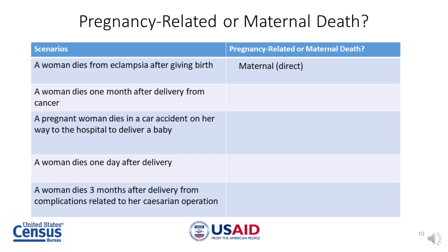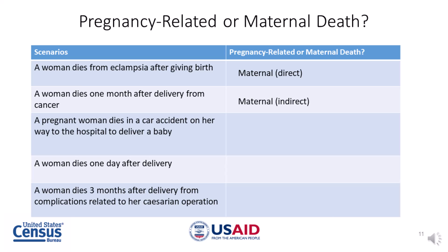Let's take a look at the next scenario. A woman dies one month after delivery from cancer — is this a pregnancy-related or maternal death? If you said maternal death, you are correct. This is an indirect maternal death because the woman died due to another disease aggravated by the physiological effects of pregnancy.